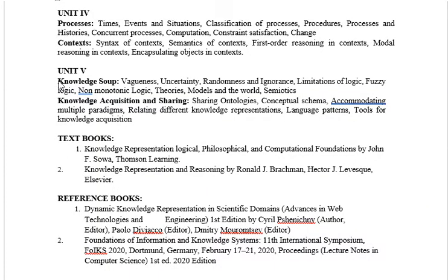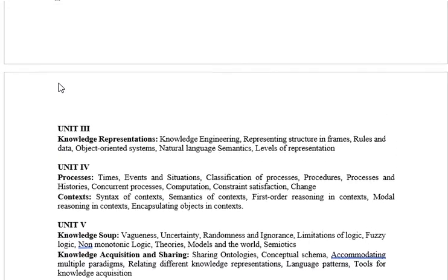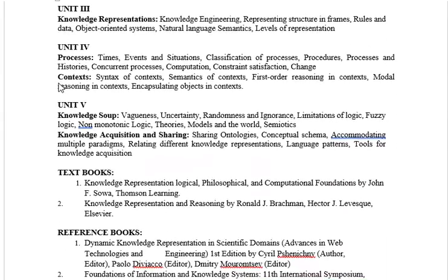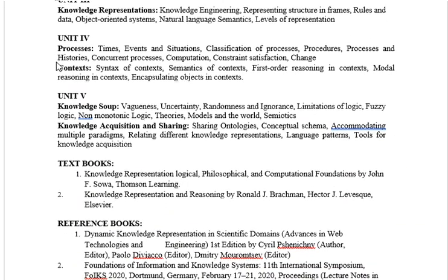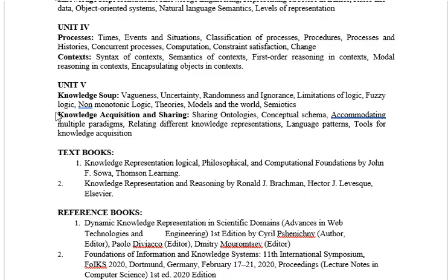Hi guys, welcome to my channel. In this video I'm going to start the fifth unit. I completed the four units, so if you want to go through the previous units which I have explained, please watch my previous videos. Unit 5 also contains two parts. The first part is 'Knowledge Soup.' Before going into the unit, you have to know about some keywords: vagueness, uncertainty, randomness, and ignorance. Let's understand these four concepts with real-time examples.